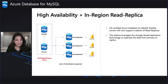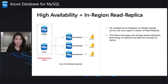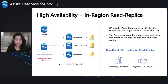As they say, the difference between ordinary and extraordinary is that little extra, and the ability to spin up a Read Replica for a HA-enabled server is exactly that little extra, as it offers an augmented DR strategy where a provisioned replica can also be promoted as a standalone in the event of disaster.